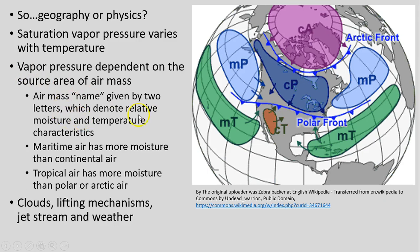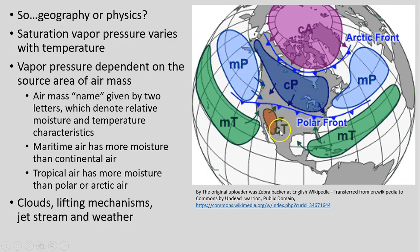We have a series of different air masses, each given a two-letter name, denoting relative moisture and temperature characteristics. Maritime tropical (mT) air is over water and very warm, from equatorial or tropical regions. Maritime polar (mP) air is also over water but much colder, from polar areas. Continental tropical (cT) and continental polar (cP) air masses are generally drier because they originate from land masses, not oceans. This will all become important as we continue covering clouds, lifting mechanisms, the jet stream, and severe weather.